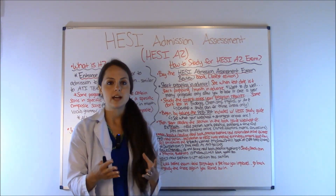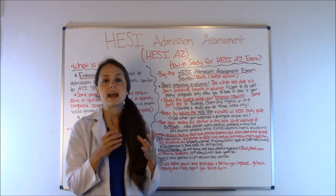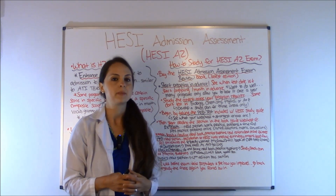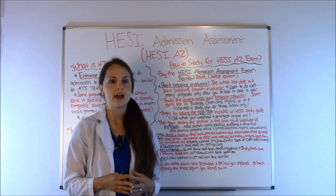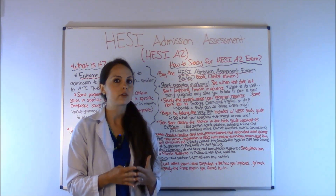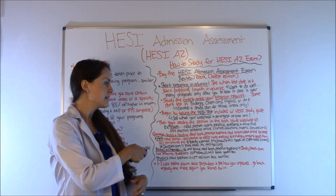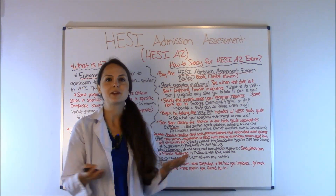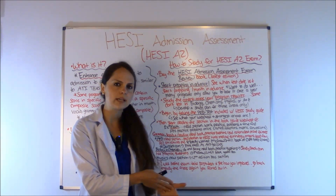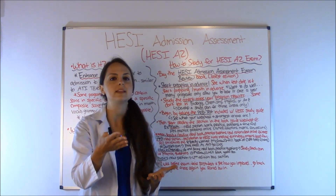First, get your HESI book — it has a pre-test. Take this pre-test, and after you take it, you'll get your score and see what areas you scored well and not so well in. Assess that and tailor your study plan based on those results, because it's telling you where you're probably not going to do well on the real exam and what you need to focus on. For instance, many people aren't good at math — if you did really badly on the pre-test in math, open up the HESI book and start reading the math section.